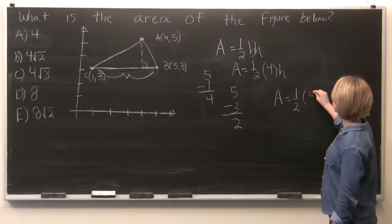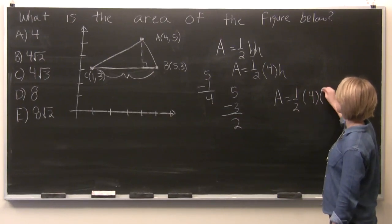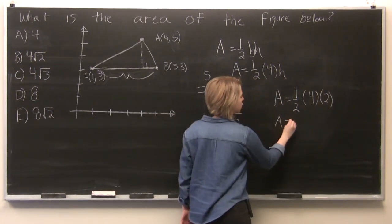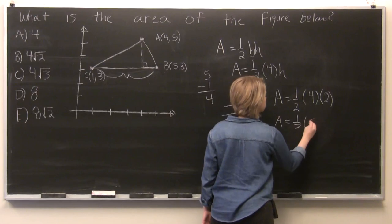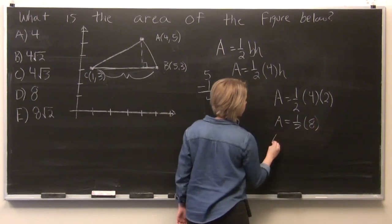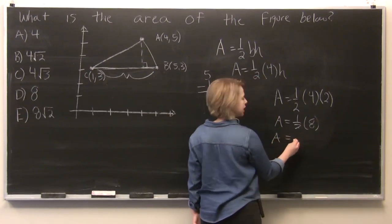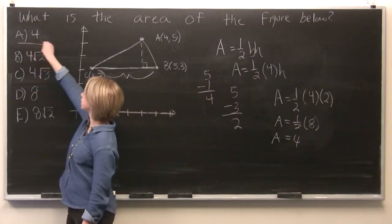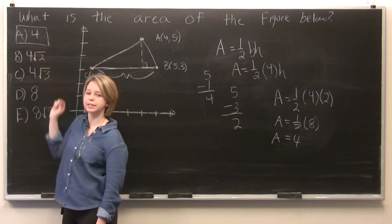So our area is equal to 1 half, 4 for our base, times 2 for our height. And so we know that our area is equal to 8 divided by 2, which is 4. And we'll see that it is one of our simpler answer choices over here.